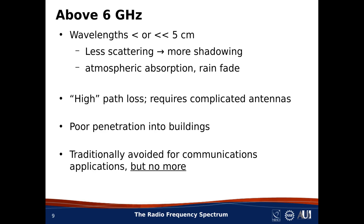Once we go above 6 GHz, we start running into challenges. These include reduced scattering, so radio shadowing becomes pronounced, and we start to see absorption of power by the atmosphere and effects such as rain fade. Path loss is increased, and we need antennas that are larger and more complicated, such as antenna arrays. Penetration into buildings is also worse. Historically these issues deterred communication developers from using these frequencies; however, this is no longer the case. First, we're running out of bandwidth in the 30 MHz to 6 GHz regime, so there is little choice but to look above 6 GHz. Second, antenna and array technology has advanced considerably, making it easier and more cost-effective to implement the antenna systems needed in this frequency regime.